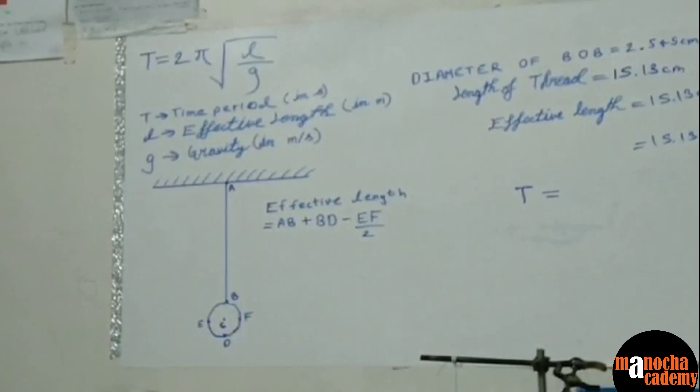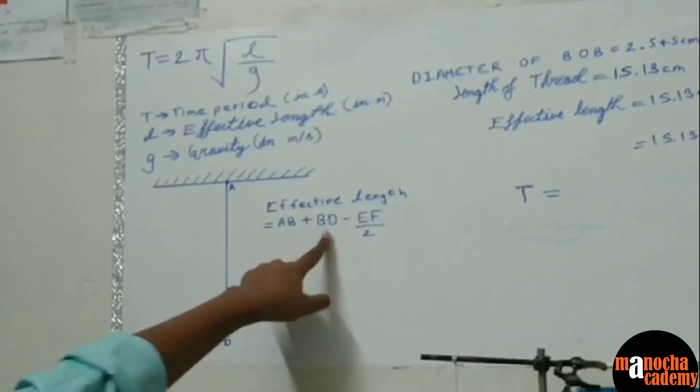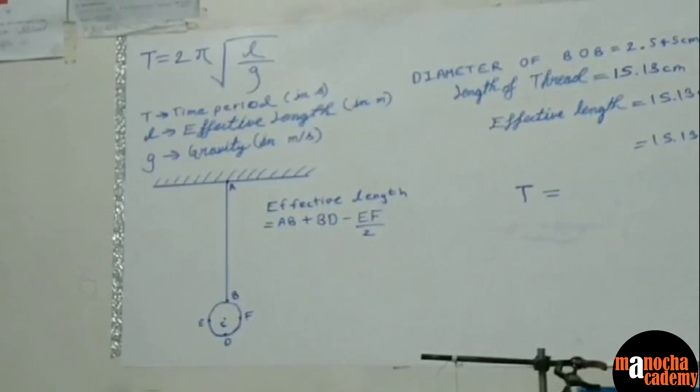Now the first step in finding this effective length is finding the diameter of the block, which is the value BD. So we can find the value of the diameter using BD.